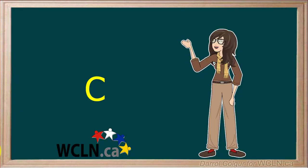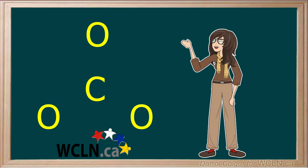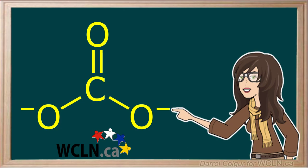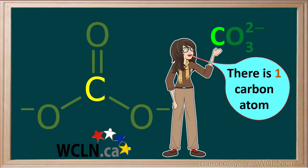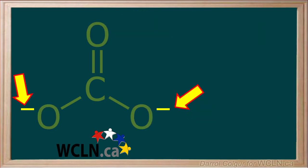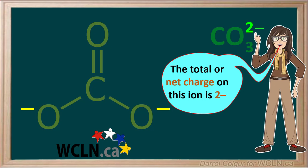Here's an atom of carbon. We'll bring in three oxygen atoms and join them to the carbon using chemical bonds. Notice two of the oxygen atoms have a negative charge. The formula for this polyatomic ion is CO₃²⁻. The formula shows there is one carbon atom and three oxygen atoms, and this ion has two negative charges, shown as 2- on the top right of the formula.